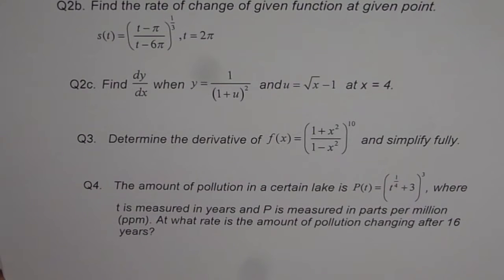Question number 4, the amount of pollution in a certain lake is p(t) equals to (t^(1/4) + 3)³ where t is measured in years and p is measured in parts per million, ppm. At what rate is the amount of pollution changing after 16 years?